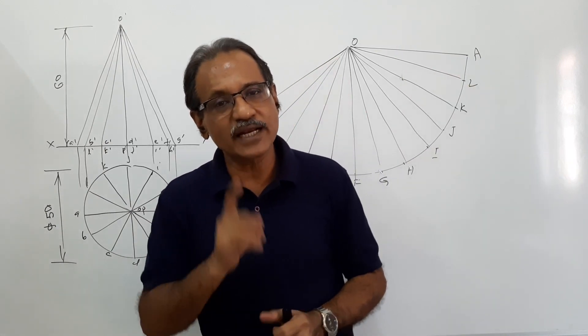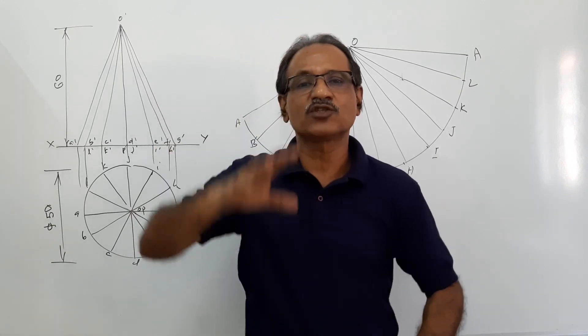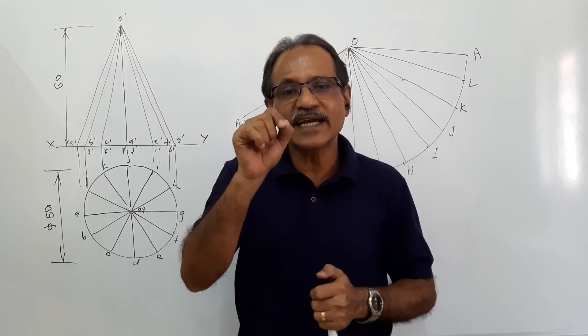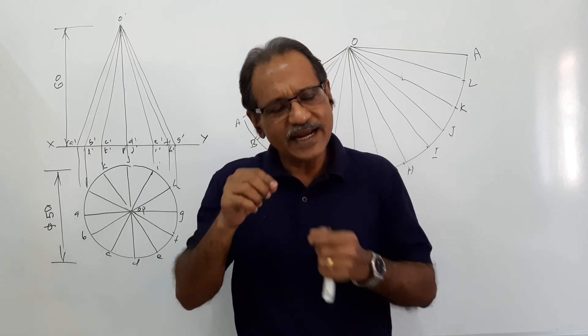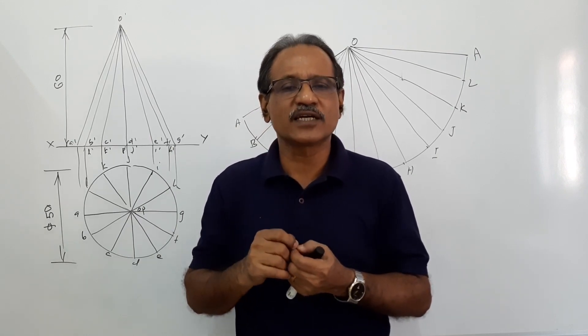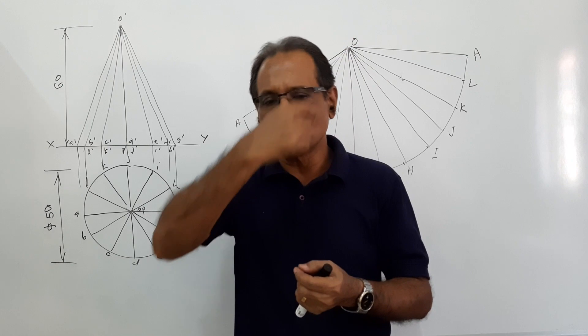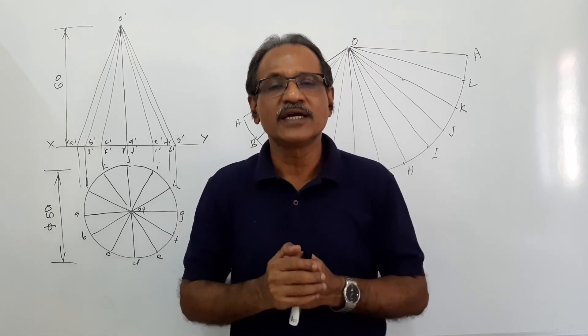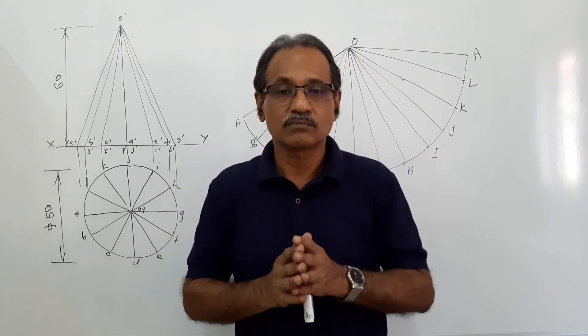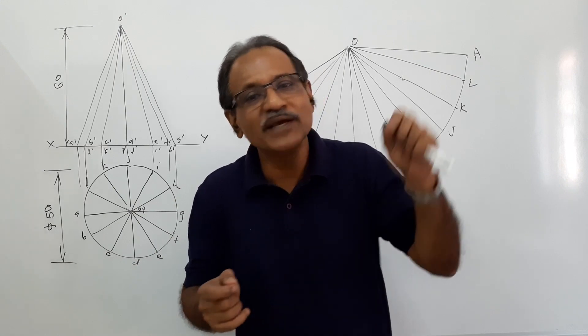That's the question. I repeat: a cone is standing on its base. There is an insect stationed at a point of its base circle. It travels around the body and comes back to the same point tracing the shortest path. Shortest path has to be a straight line.